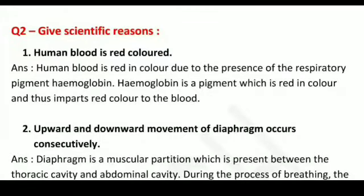Now, question number two — Give scientific reasons. First: Human blood is red colored. Answer: Human blood is red in color due to the presence of the respiratory pigment hemoglobin. Hemoglobin is a pigment which is red in color and thus imparts red color to the blood.